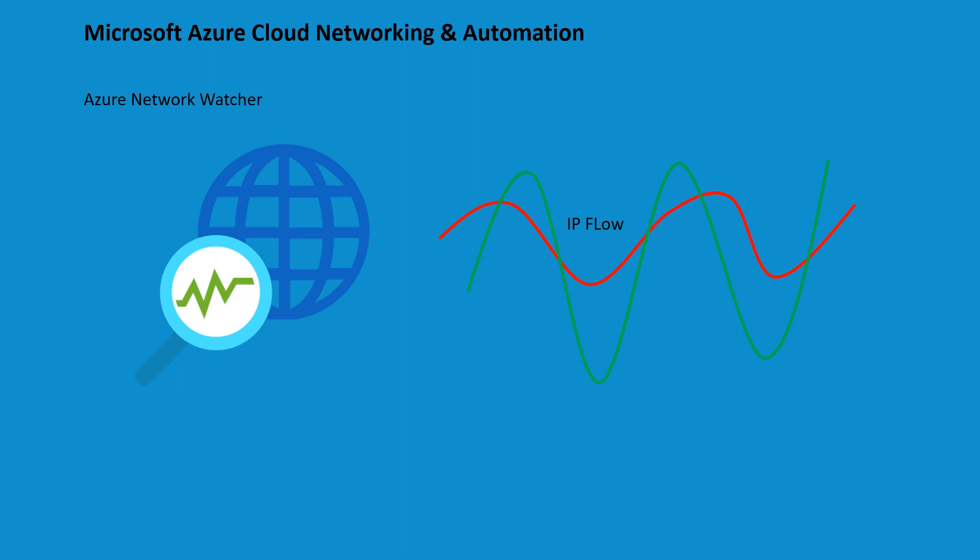Hello everyone. In today's episode we will be discussing Azure Network Watcher. This is primarily designed for IaaS deployments within the Azure cloud environment. It offers a suite of tools and features that are particularly useful for managing and troubleshooting the network aspect of IaaS resources such as virtual machines (VMs), virtual networks (VNets), and network security groups.